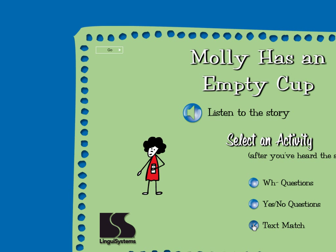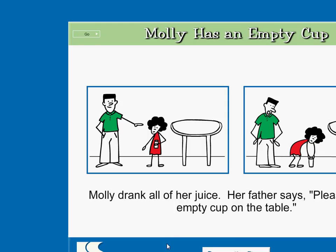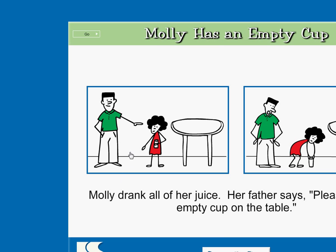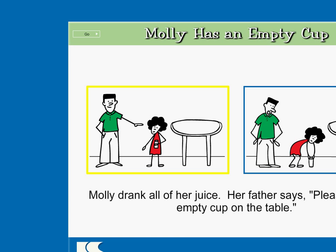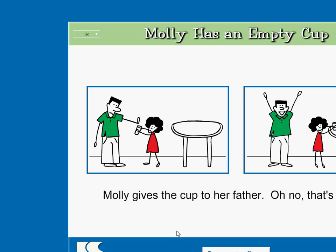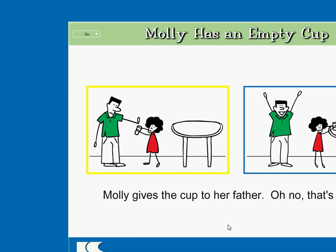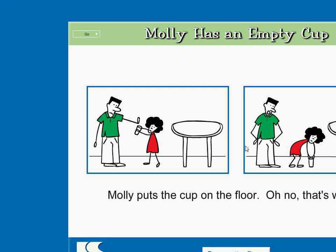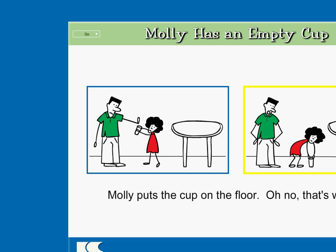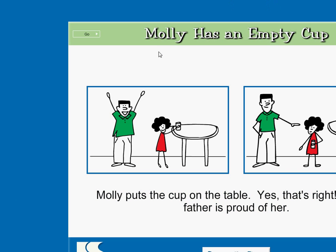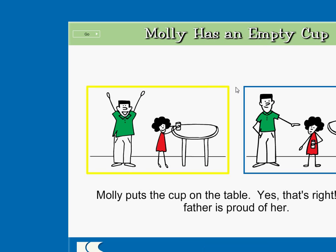Molly has an empty cup. Click on the picture that matches these words. Molly drank all of her juice. Her father says, please put the empty cup on the table. Excellent! Click on the picture that matches these words. Molly gives the cup to her father. Oh no, that's wrong! Wow! Click on the picture that matches these words. Molly puts the cup on the floor. Oh no, that's wrong! Wow! Click on the picture that matches these words. Molly puts the cup on the table. Yes, that's right. Molly's father is proud of her. Right on!